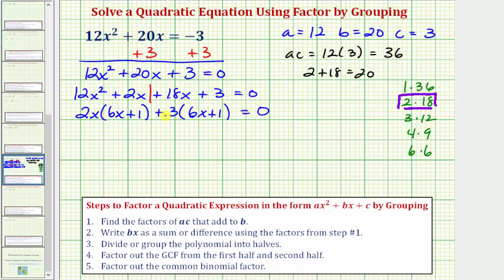Notice on the left, these two products do share a common binomial factor of 6x plus one, which brings us to the last step of factor by grouping. We want to factor out the common binomial factor, which in this case is the quantity 6x plus one. So if we factor out 6x plus one, notice how we'd be left with the quantity 2x plus three, which is our second factor. So now we have the left side factored, and this is equal to zero.